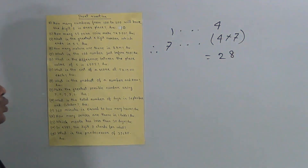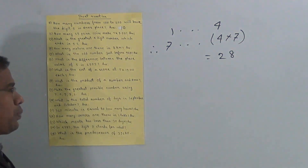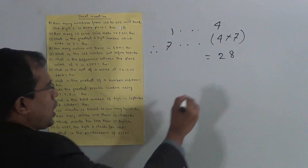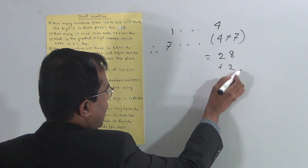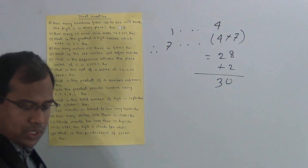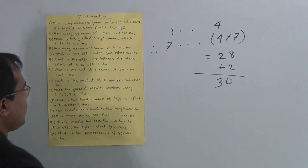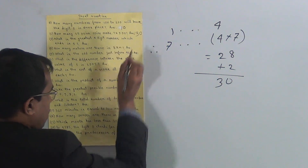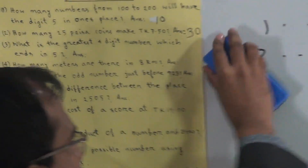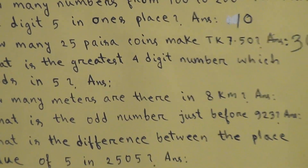In 7 taka there are 28 coins. For the remaining 0.50 poysa, there are 2 more coins. So total coins = 28 + 2 = 30. The answer to question 2 is 30 coins.